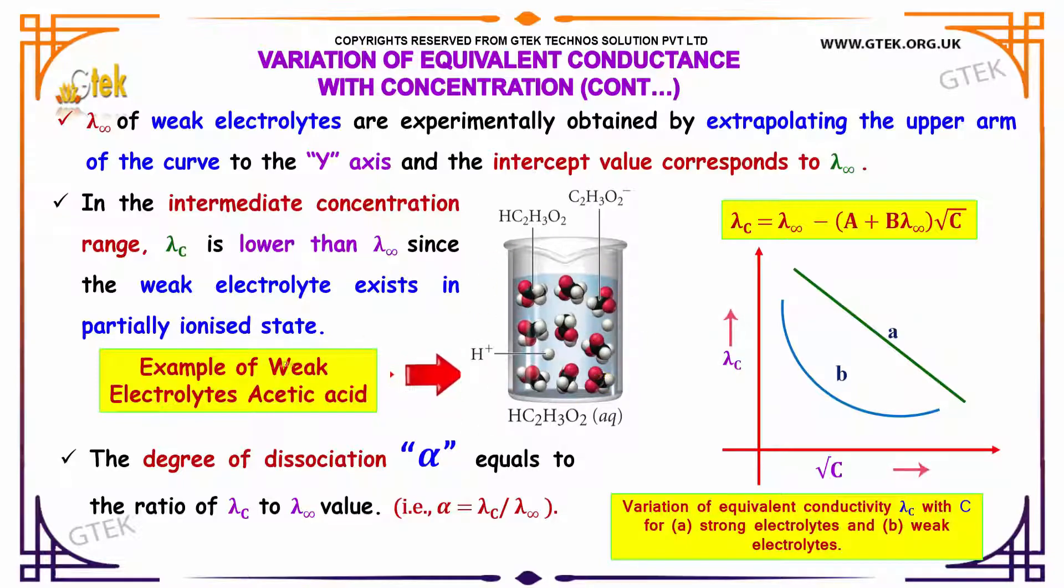The degree of dissociation alpha equals to the ratio of lambda c to lambda infinity value, that is alpha equals lambda c divided by lambda infinity. Here is an example for weak electrolyte which you can see over here.